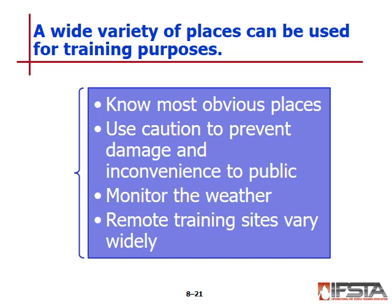There are many locations for training evolutions at the company officer level. The most obvious include the station bay, classroom, parking lot, or driveway — ideal for training with fire hoses, portable extinguishers, and ground ladders. These require caution to prevent station damage or inconveniencing the public, and weather should be monitored. Off-site remote training sites vary widely; available sites should include the owner's name, access details, water supply sources, and possible types of training.